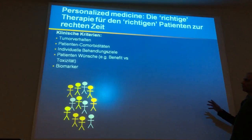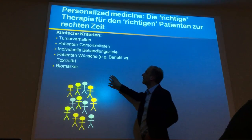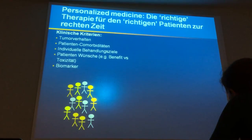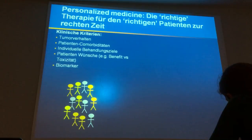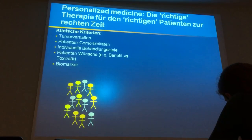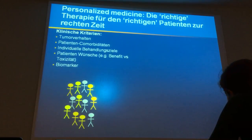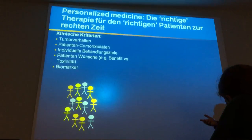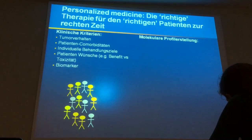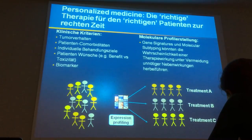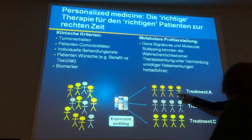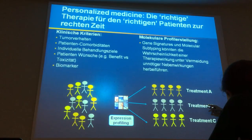So far we have used clinical criteria to develop a treatment concept: how indolent or malignant is the tumor behavior, what are the patient's comorbidities, what is the individual treatment aim, and toxicity. We also use biomarkers to stratify treatment — not individualizing, but stratifying. With a molecular concept, we do gene signatures and molecular subtyping, then give subgroup A treatment A, subgroup B treatment B, and so on.